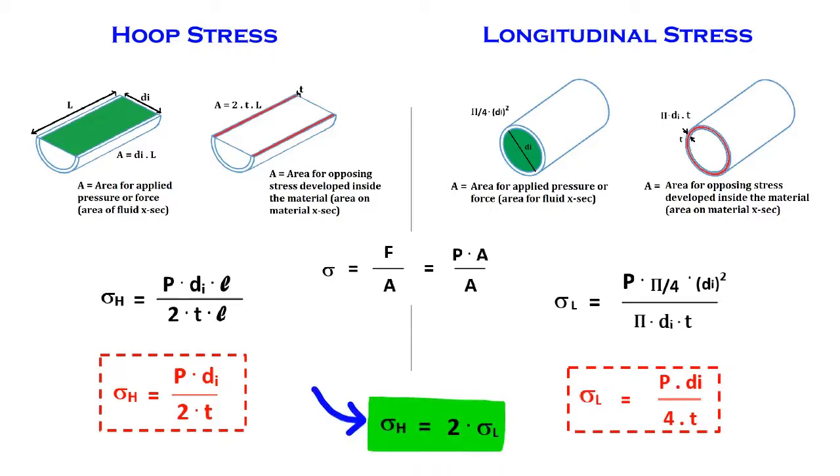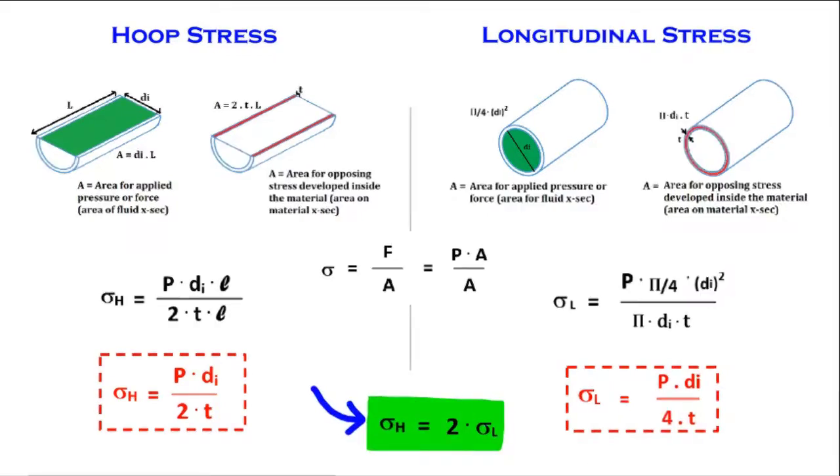And quite interestingly, this hoop or circumferential stress acts on the longitudinal joint, so the most important weld joint, which is usually given highest consideration in codes and standards, is the longitudinal joint due to the above stated fact.